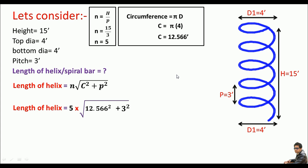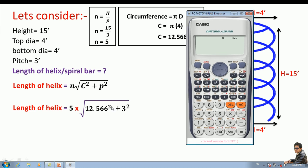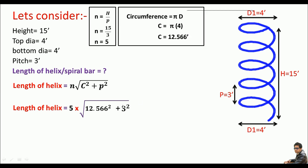Now do some maths or use your calculator. We can get the length of the given helix. Let me use my calculator because this calculation is important. This is the square root and 12.566 square plus 3 square equals 12.9 times 5. This is 64.59 feet. So the length of this helix is 64.59 feet. And this is it.